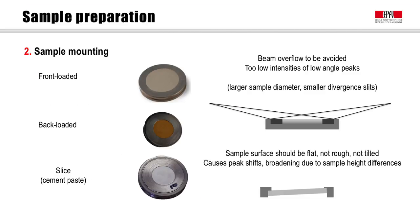In mounting the obtained powders and slices onto the sample holders for quantitative XRD, the following aspects should be considered. In flat plate reflection geometry, care should be taken that the sample surface area and thickness are large enough to avoid any beam overflow at low angles. Too small surface areas will lead to an underestimation of peak intensities at low angles and may also cause increased background from the sample holder. In case smaller sample holders are used, one can change the diffractometer optics by choosing smaller divergent slits.